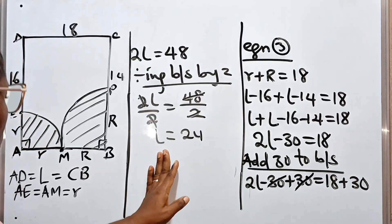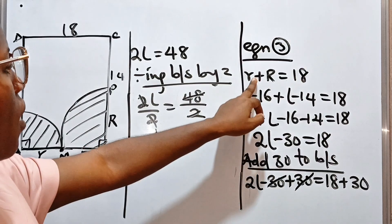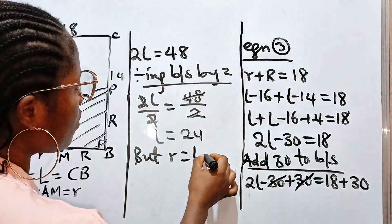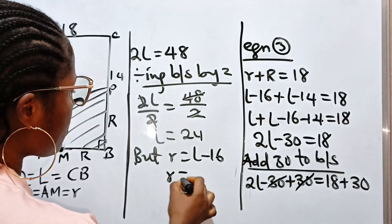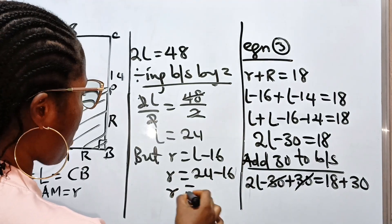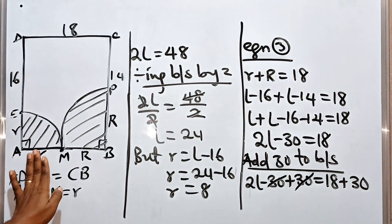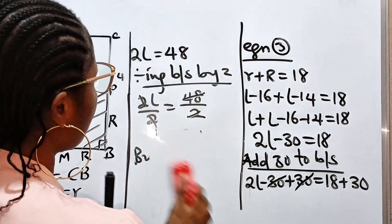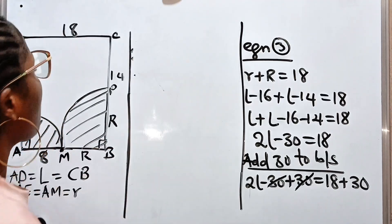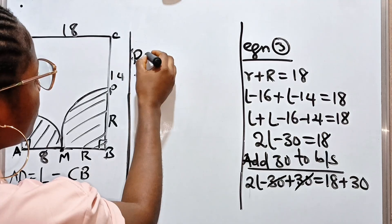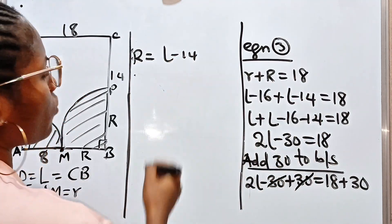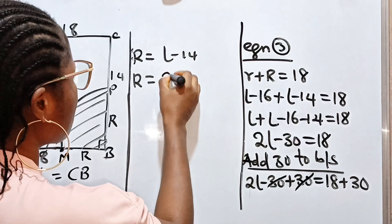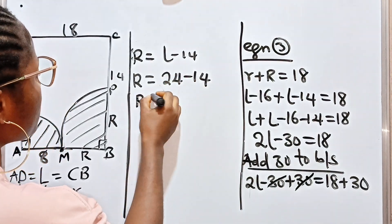Now remember that small r equals L minus 16, so small r equals 24 minus 16, which gives r equals 8. Similarly, capital R equals L minus 14, so capital R equals 24 minus 14, which gives R equals 10.